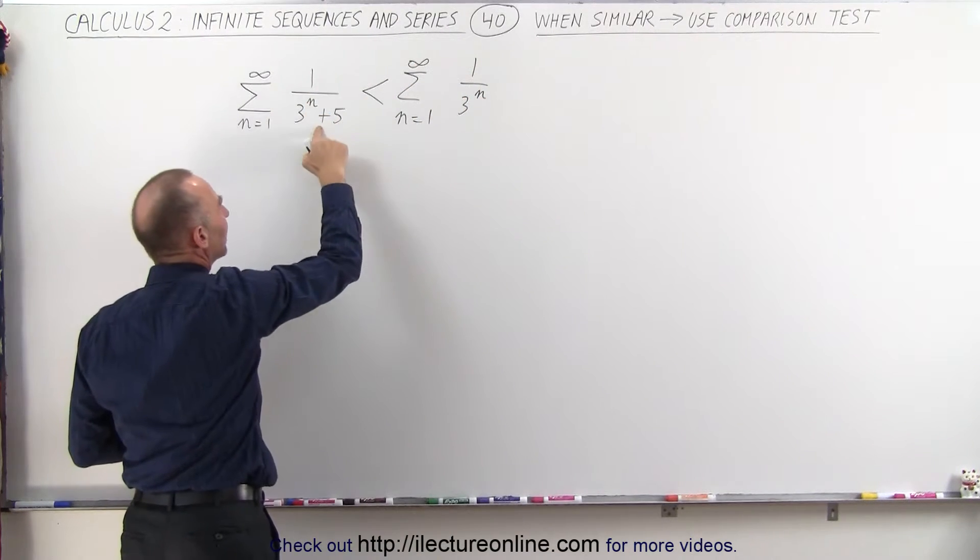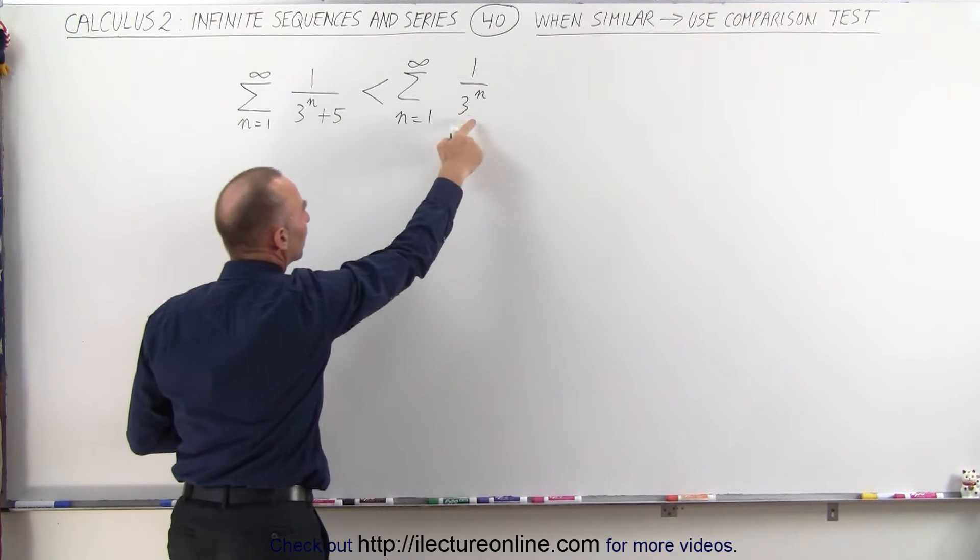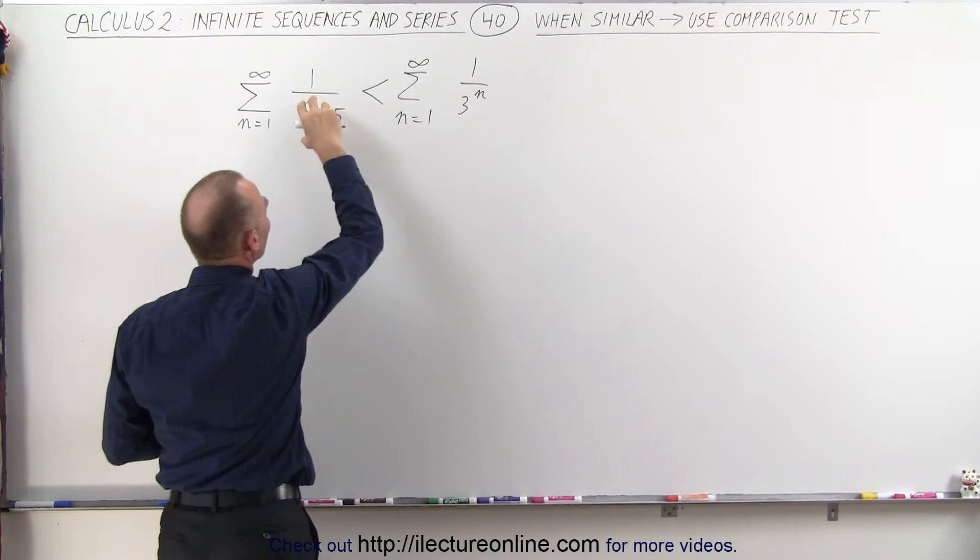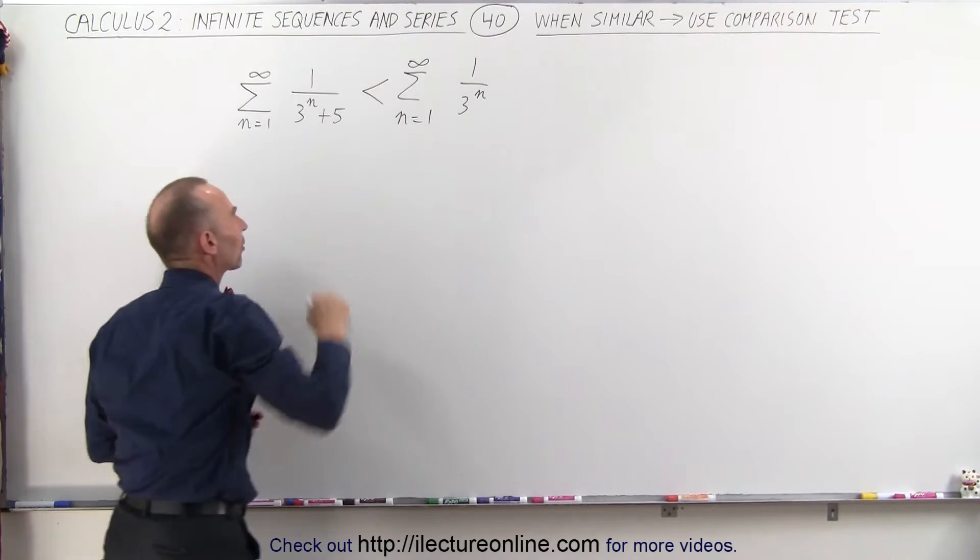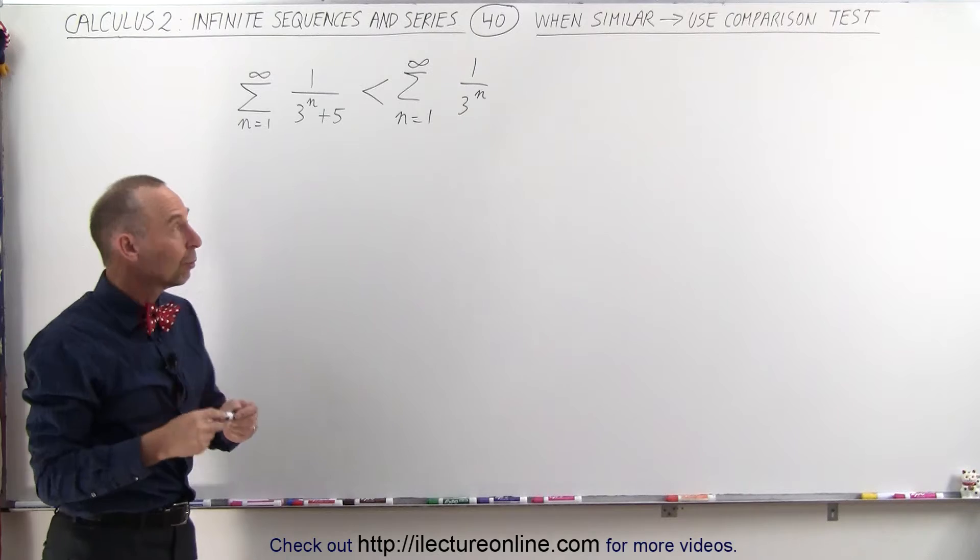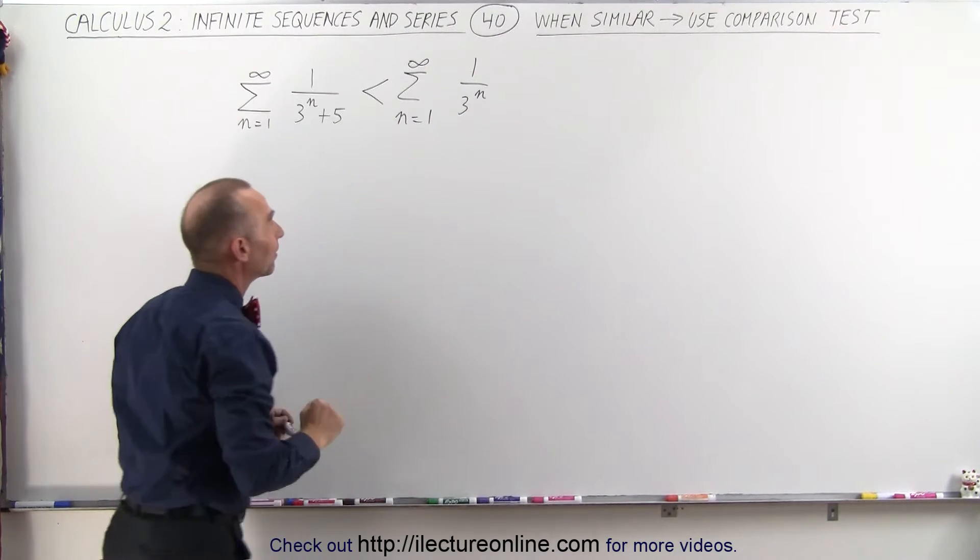That's because the denominator here is larger than the denominator here, so for every denominator in the series, the denominator here will be larger than the denominator there, which means the fraction will be smaller in each case, which means the left side is indeed smaller than the right side.